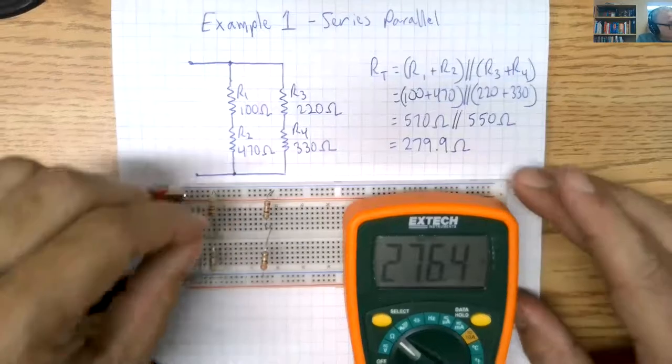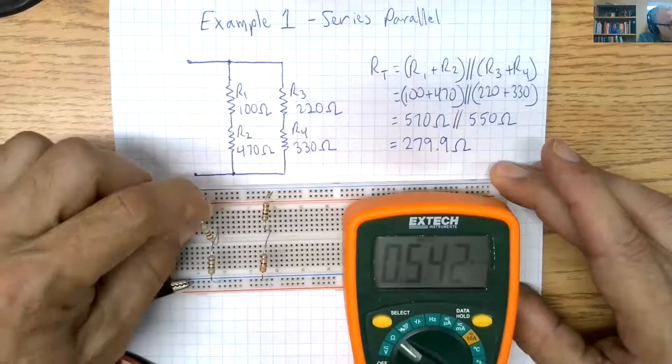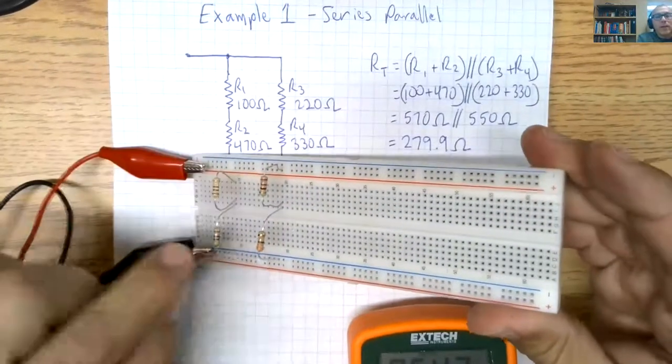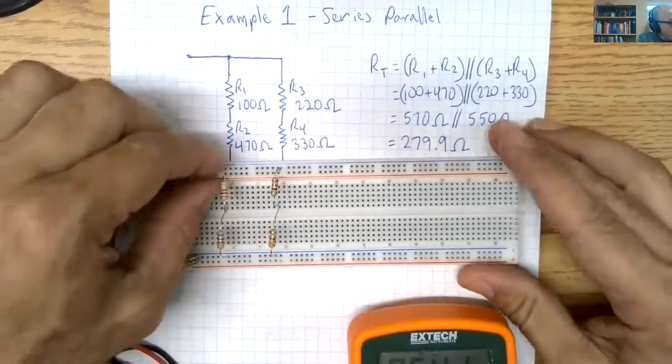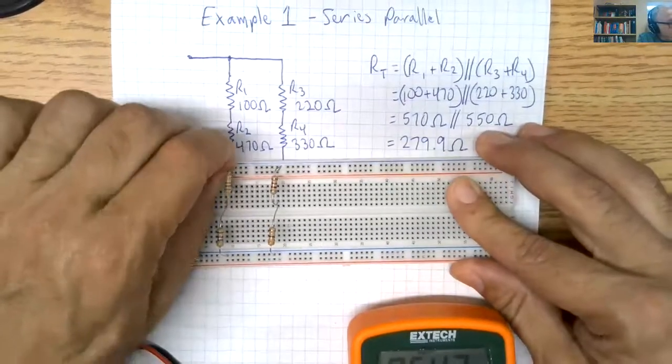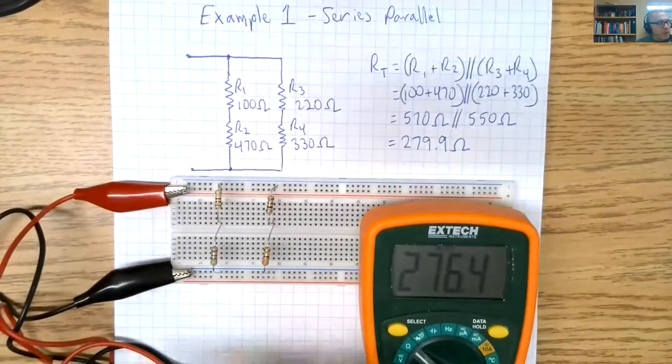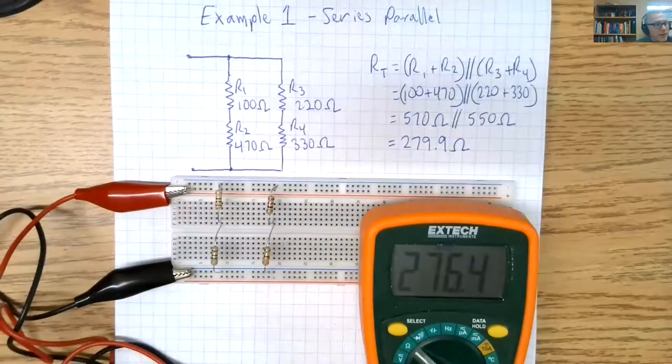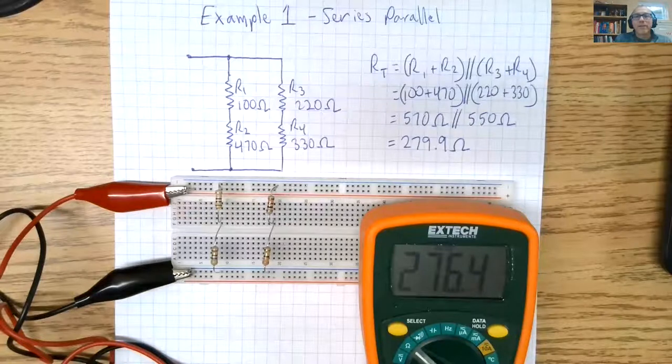Another problem a lot of students have is they will put both ends of a component in the same column like that. That doesn't work because we are now shorting out that resistor. So the fact that RT came out very close to the calculated value is a 99% indication that I have the right circuit.